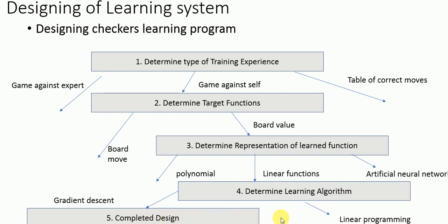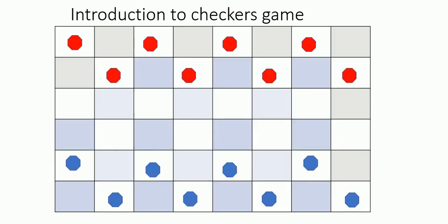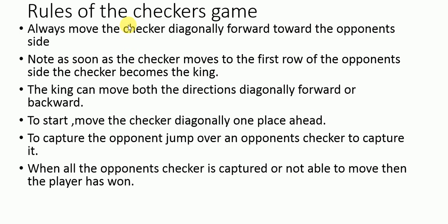Before moving to the next part, we need to understand what the checkers game is. There are two pieces — the blue pawn and the red pawn. This is how the checkers game looks at the basic level, and these are the rules of the checkers game.